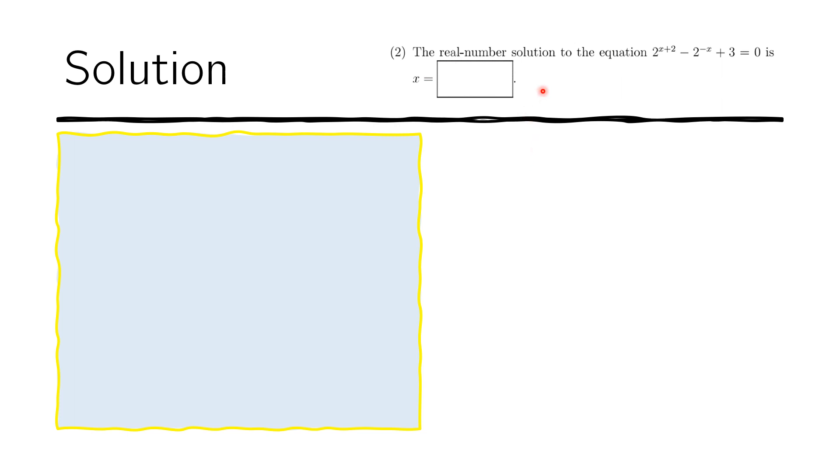This is a pretty straightforward problem. The first thing we need to do is consolidate 2^x as one variable. That's going to make it easier for us to manipulate the equation.